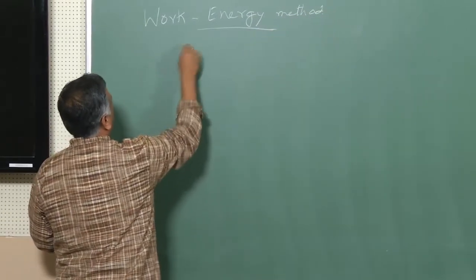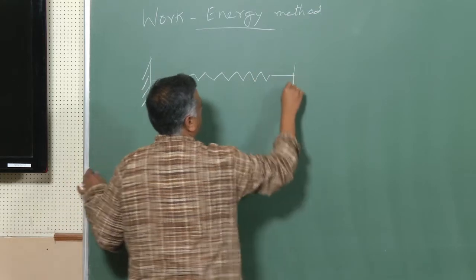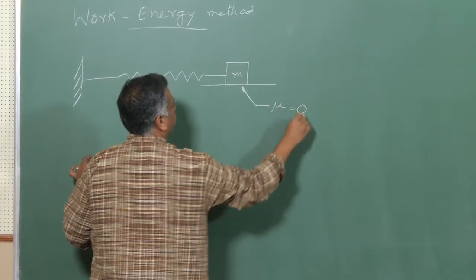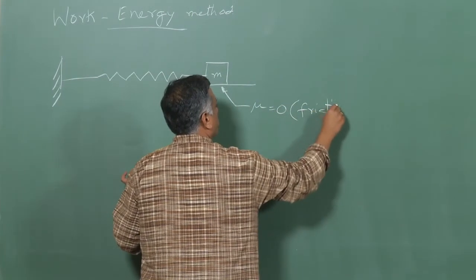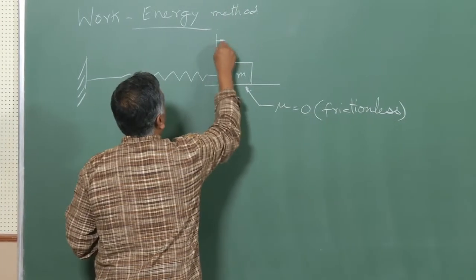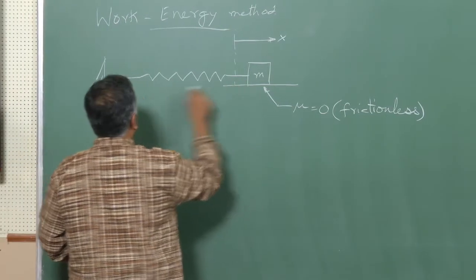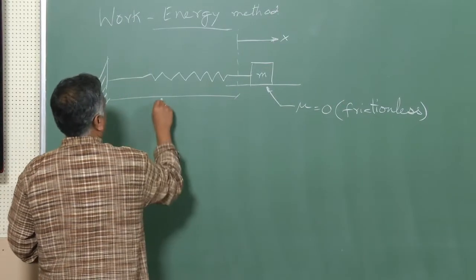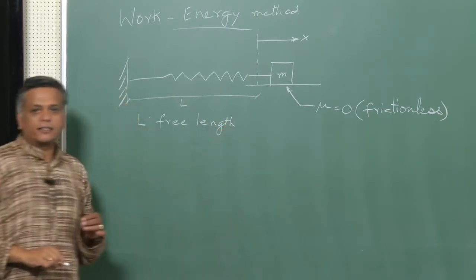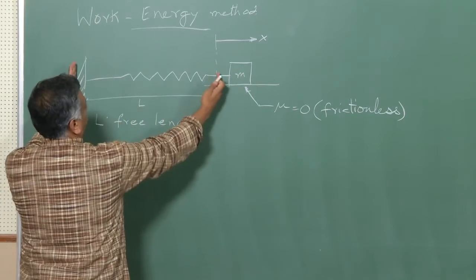We are going to look at a work energy method with a spring. So let us take a very simple example — some mass m lying on a surface with no friction. I am going to place my origin at some point here, with a positive x axis, and I am going to denote this length of the spring L as the free length. A spring typically has something called a free length and that is the length at which the force becomes zero — the force on this body is zero when the spring is of that length.